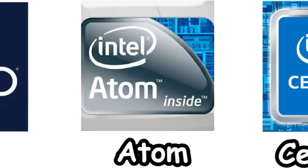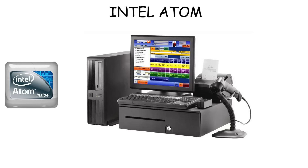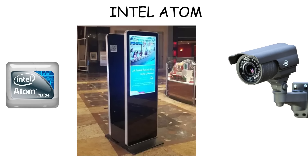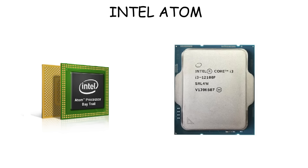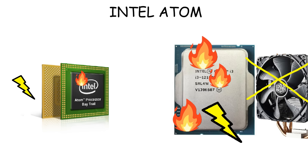Intel Atom is an ultra-low-power processor built for small and portable devices. You'll mostly find them in point-of-sale machines used for payments, digital kiosks in malls or airports, and embedded in devices like security cameras. These CPUs are designed to use very little electricity compared to Intel processors in laptops and desktops, so they barely generate heat. That's why they don't really need fans or big cooling systems like other CPUs.